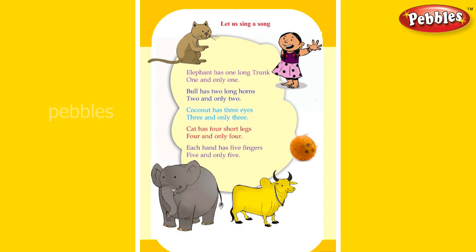Let us sing the song once again. Elephant has one long trunk, one and only one. Bull has two long horns, two and only two. Coconut has three eyes, three and only three. Cat has four short legs, four and only four. Each hand has five fingers, five and only five.